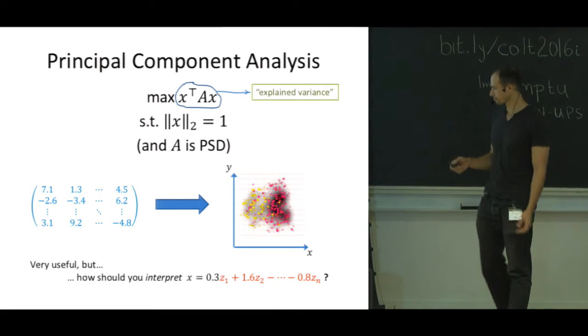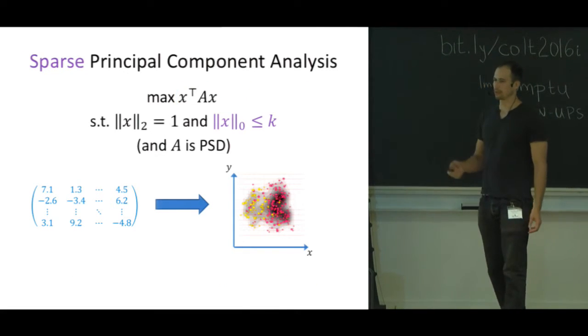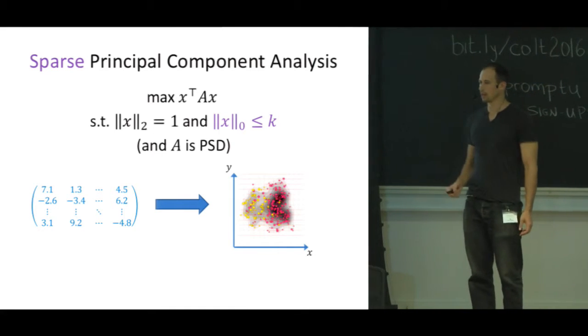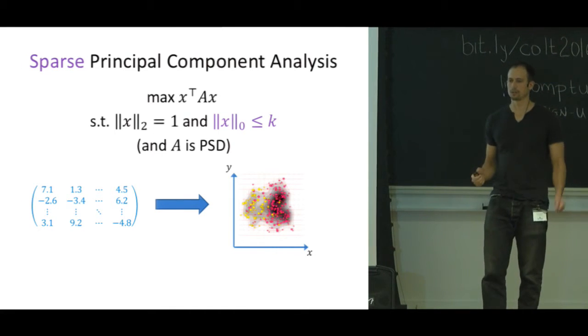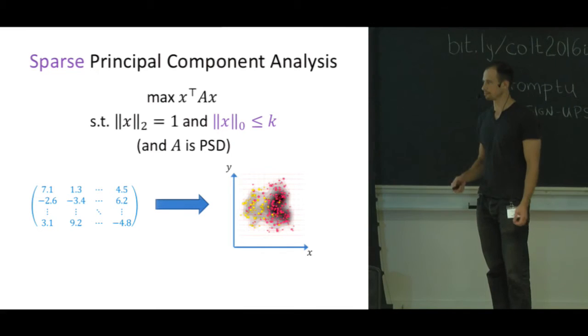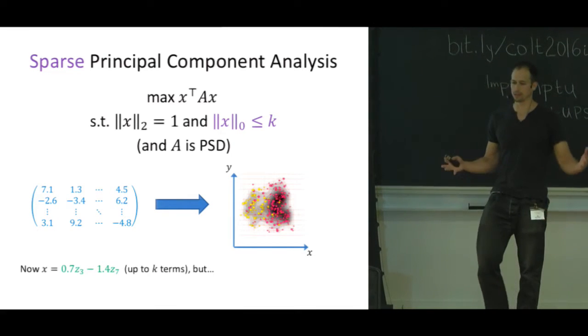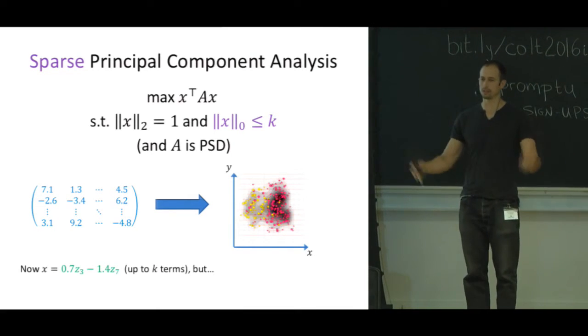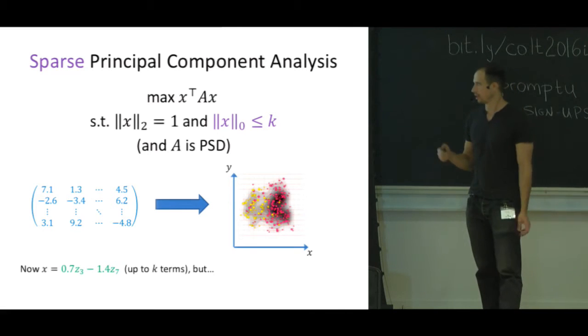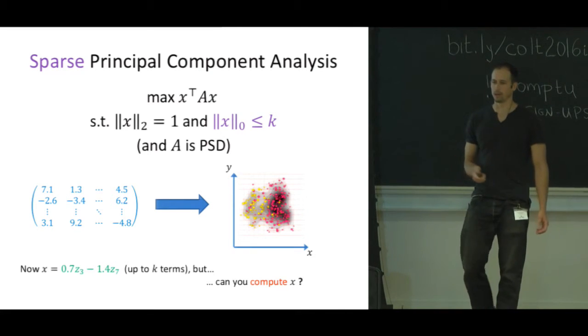Instead we want to do sparse PCA, restricting this vector X to be of sparse k-decay. It's now much easier to interpret, less likely to be overfit, but we have some computational issues.